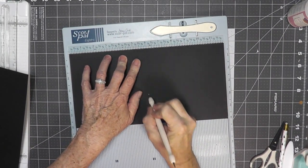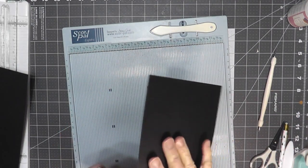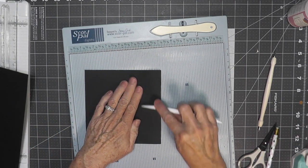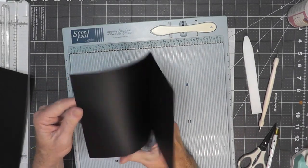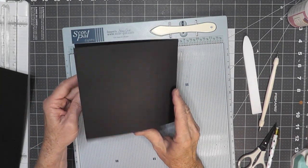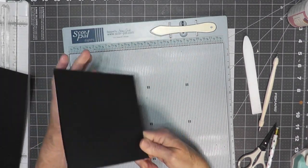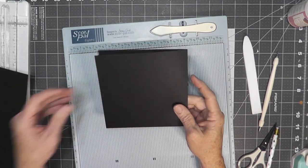For your base pages, you will take the 12 inch by 6 inch pieces you just cut, and you will score each of these, there's four of them, at 6 inches, and then fold in half and burnish. This creates your base page. So you'll have four of these, we're making four page sets, so all four should be scored in half at 6 inches and then folded and burnished in half.